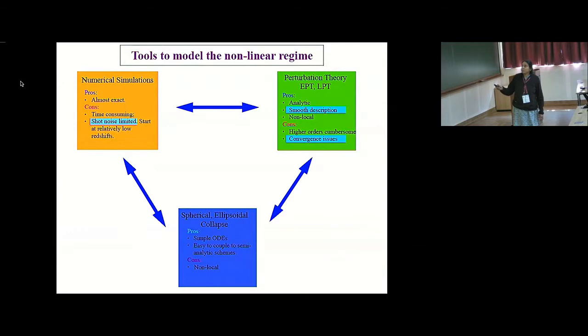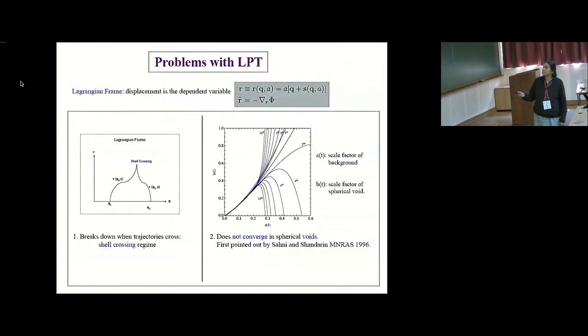The talk today will focus on perturbation theory in the Lagrangian frame, and in particular I will talk about some of these convergence problems. So what is Lagrangian perturbation theory? The main variable of interest is the displacement. So the physical position R is expanded around the expanding background, and the only force is Newton's law of gravity. So S is the main quantity of interest. You put this back into the equation and solve perturbatively. The density is computed from the volume transformation between the initial coordinate space and the final coordinate space, and because when two particle trajectories cross, the volume element formally becomes zero and the density effectively diverges, and that's when Lagrangian perturbation theory breaks down.